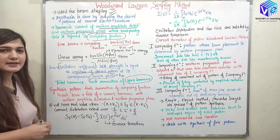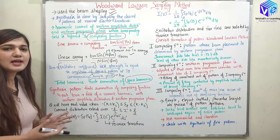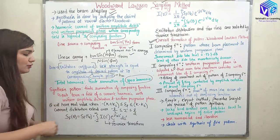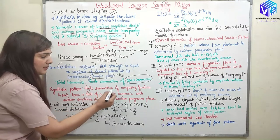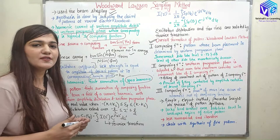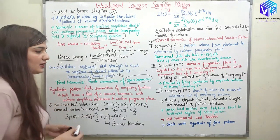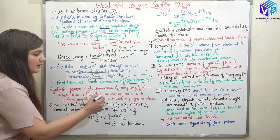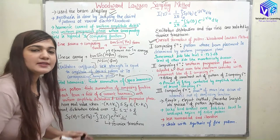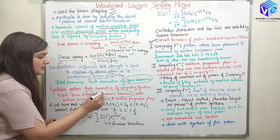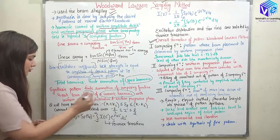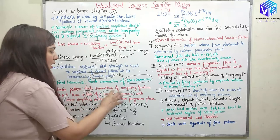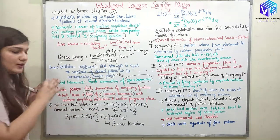Coming to the synthesis pattern: we have a finite summation of the fields, or equivalently a finite summation of the composing functions. Each term in the composing function represents a harmonic current, and the field associated with the current harmonic has uniform amplitude and uniform progressive phase. We use this finite summation of composing functions to synthesize the given field pattern of the antenna.